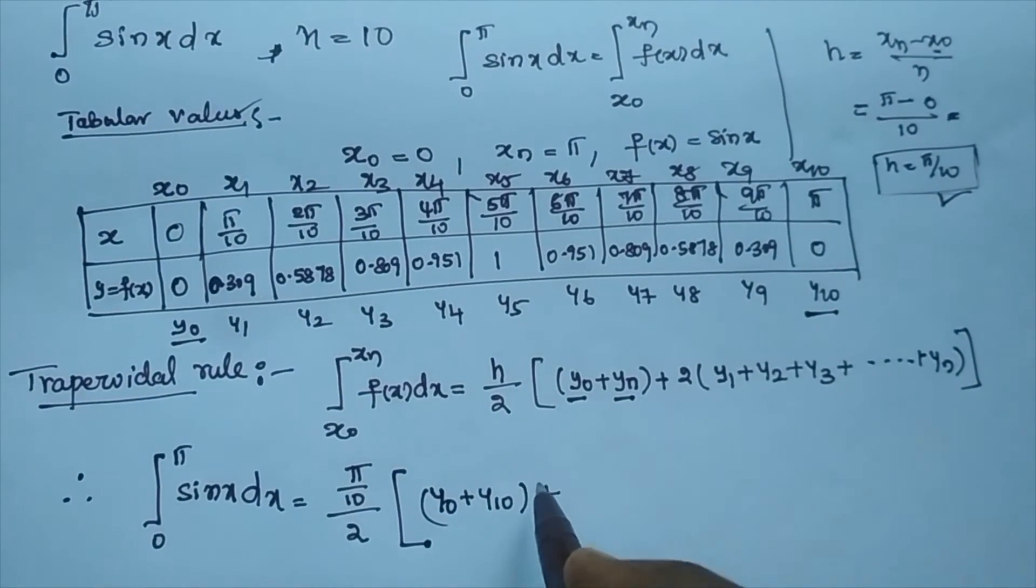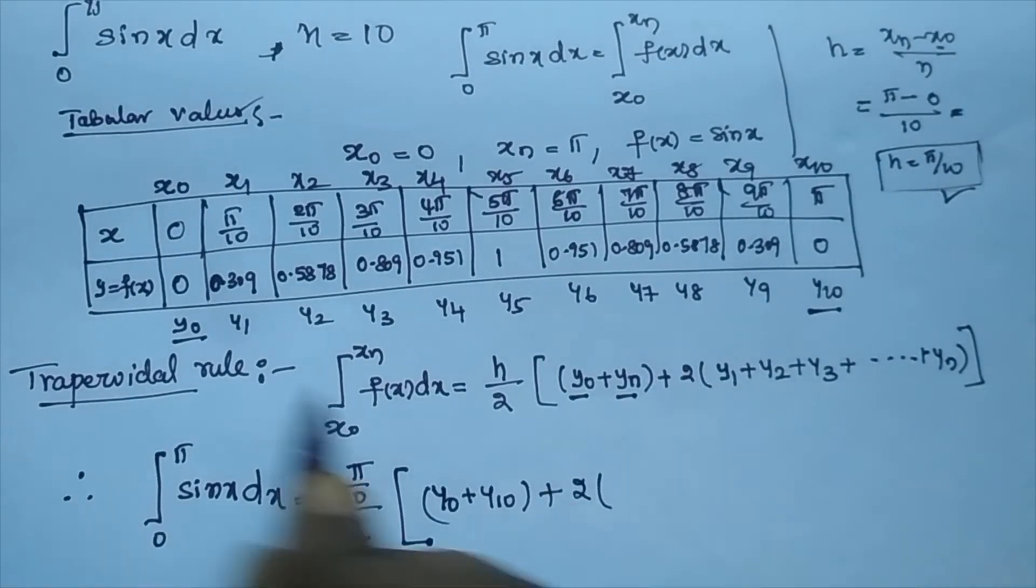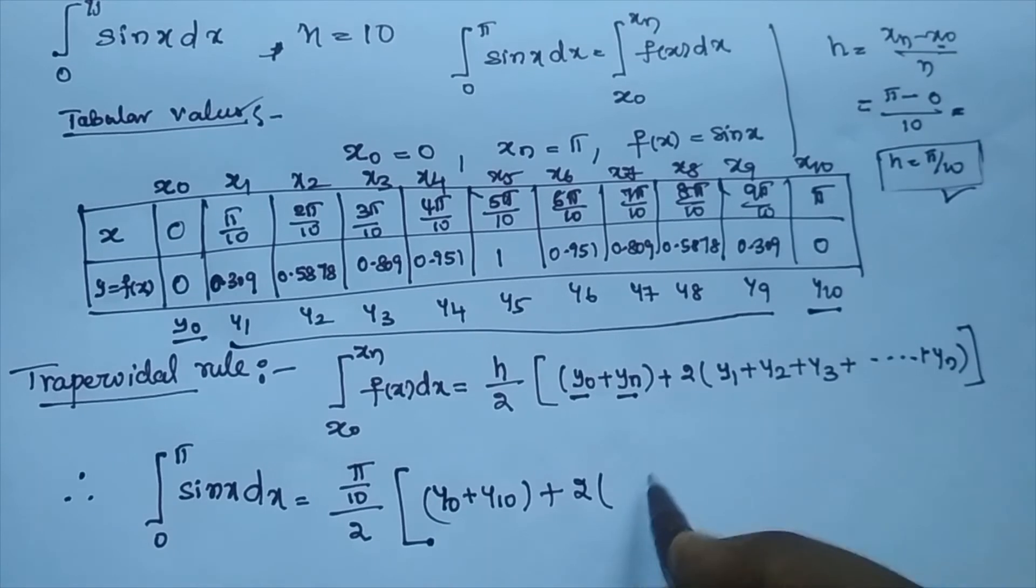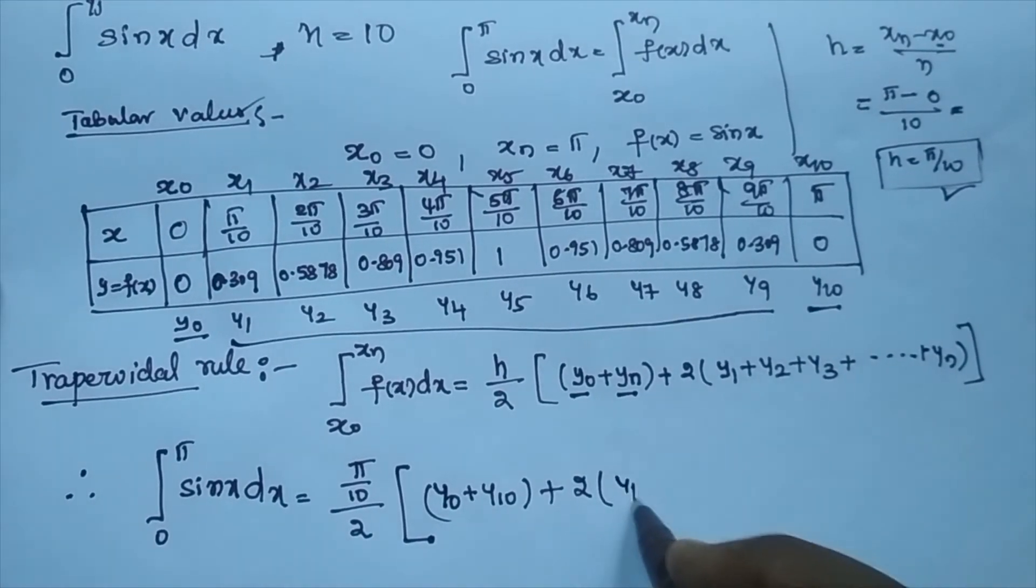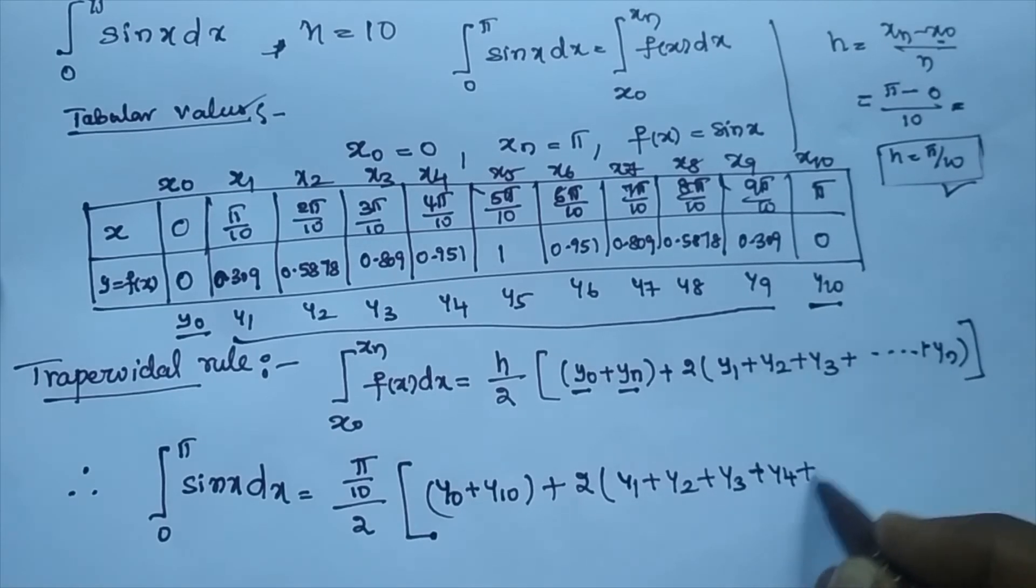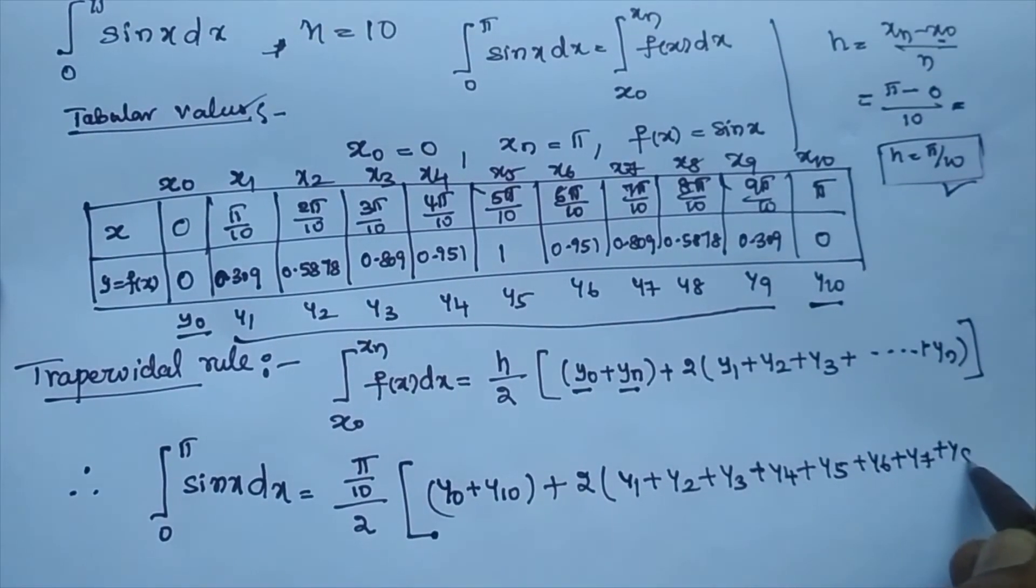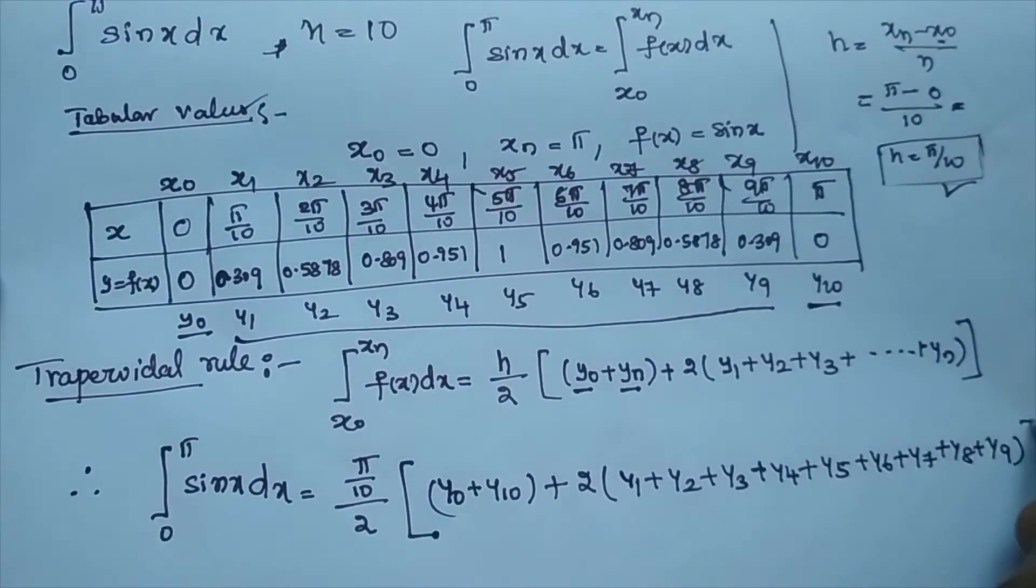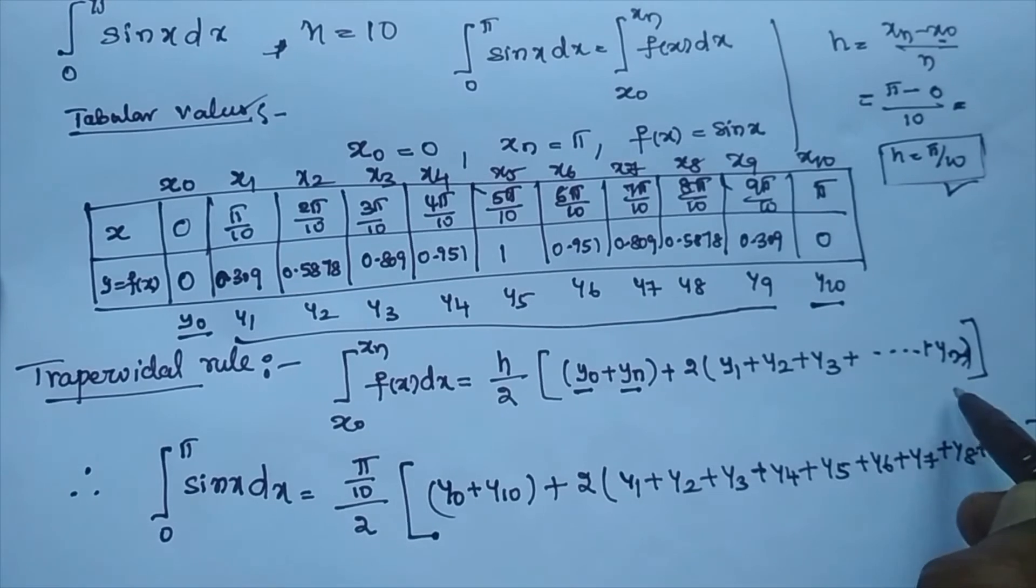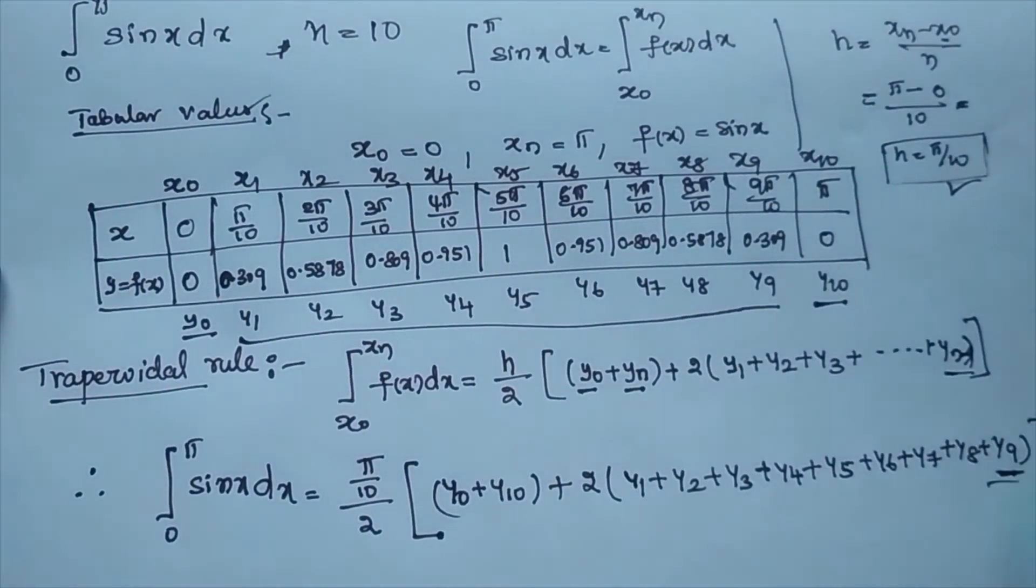y0 plus y10 plus 2 into remaining observations. Remaining is y1 to y9. So y1 plus y2 plus y3 plus y4 plus y5 plus y6 plus y7 plus y8 plus y9. See, satisfying yn minus 1, here yn minus 1 is y9. Both are satisfying.